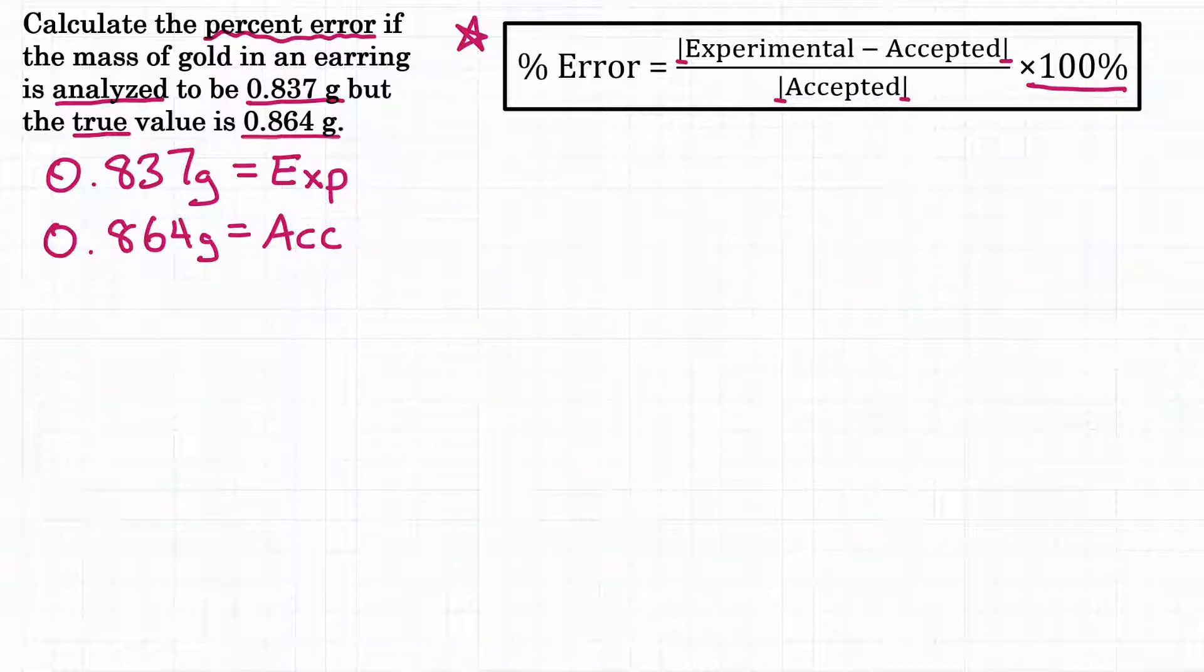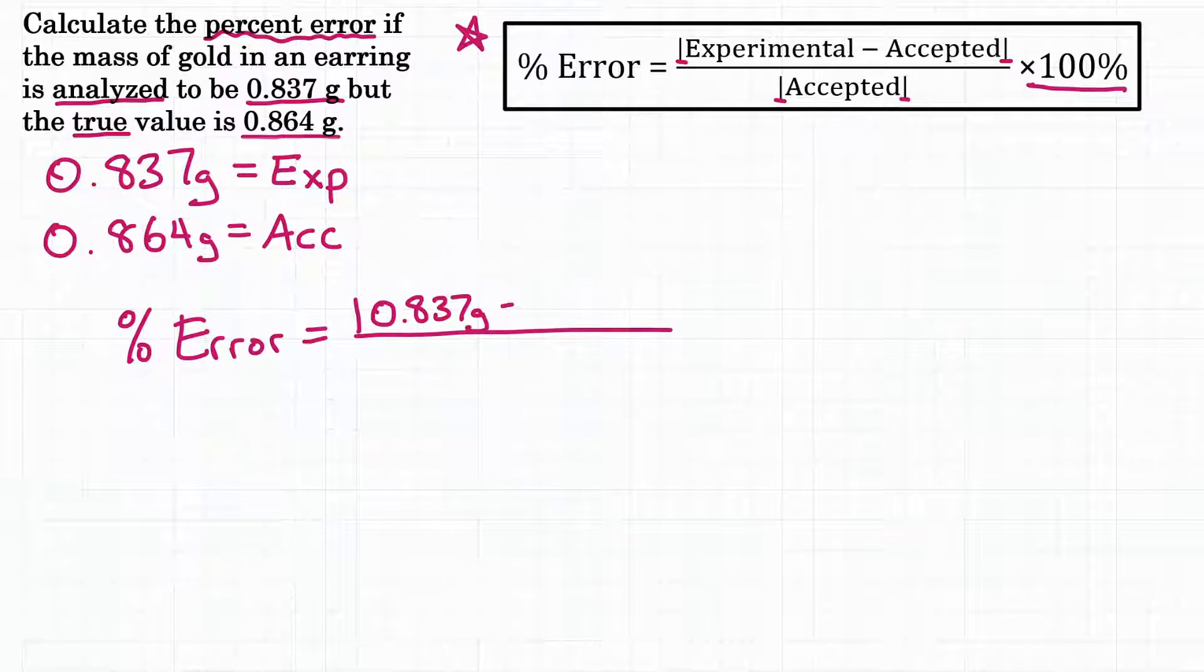So let's plug in our information. For percent error, that is equal to, we have our fraction, and on top of the fraction is, in absolute value, the experimental minus the accepted. So our experimental value is 0.837 grams minus our accepted is 0.864 grams, and then that's an absolute value bar. And then on bottom is the accepted value again, by itself, in absolute value, so 0.864 grams. All of that times 100, and then add that percent sign.